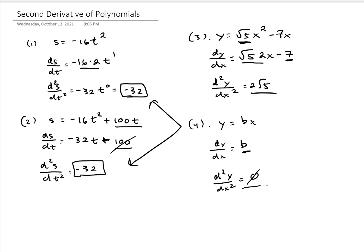Just some notation. When we were looking at the first example, we had s equals minus 16t squared. The first derivative can also be written as ds/dt, or it can be written as s prime of t. These are equivalent.